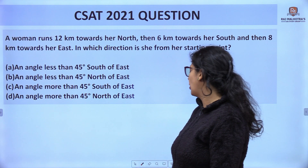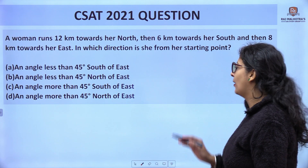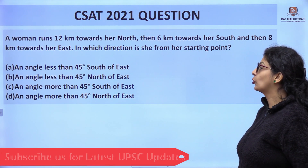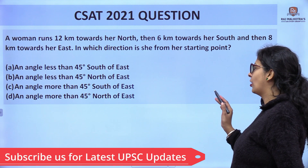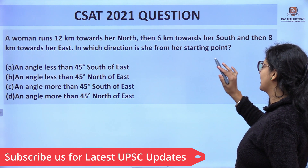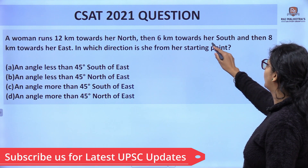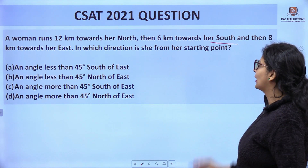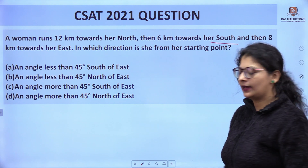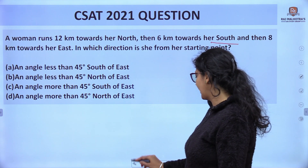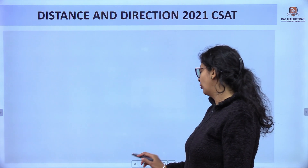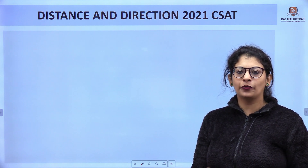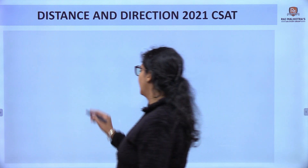Let's check the question. A woman runs 12 kilometers towards her north, then 6 kilometers towards her south, then 8 kilometers towards her east. We have four types of direction: north, south, west, and east.